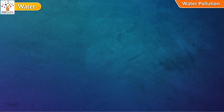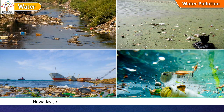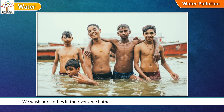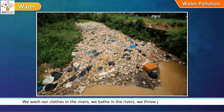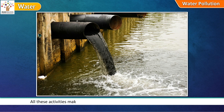Water pollution. The water we drink comes from the river near us. Nowadays, many of our rivers are turning dirty because of what we humans do. We wash our clothes in the rivers, we bathe in the rivers, we throw garbage into the rivers and also dump harmful substances into the river water. All these activities make the water unfit for drinking. This is called water pollution.